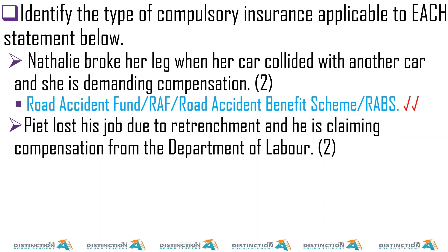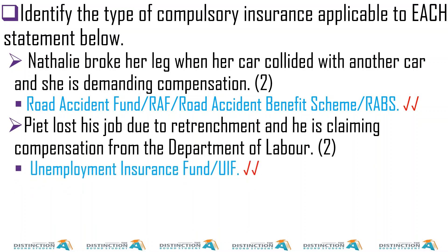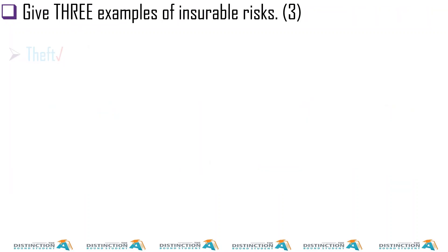Identify the type of compulsory insurance applicable to each statement. Natalie broke her leg when her car collided with another car and is demanding compensation — this will be Road Accident Fund, because it's injuries sustained on public roads. Pete lost his job due to retrenchment and is claiming compensation from the Department of Labour — this will be Unemployment Insurance Fund. We don't have many examples of compulsory insurance, so the answers become obvious.